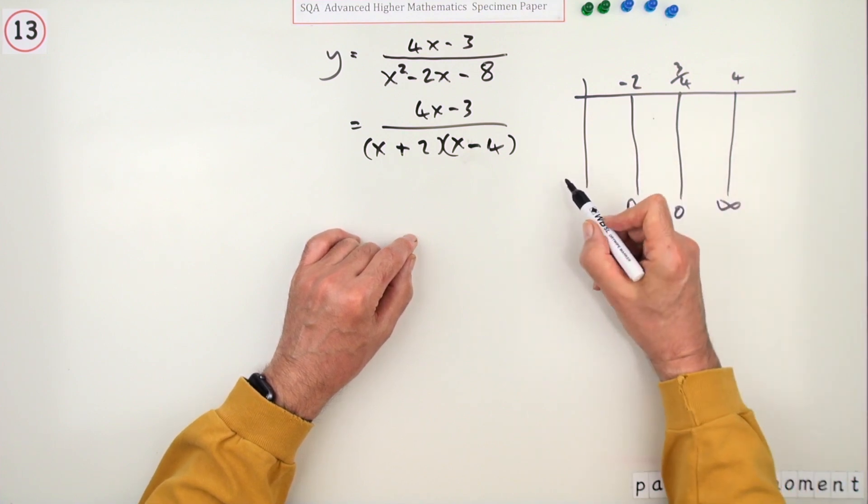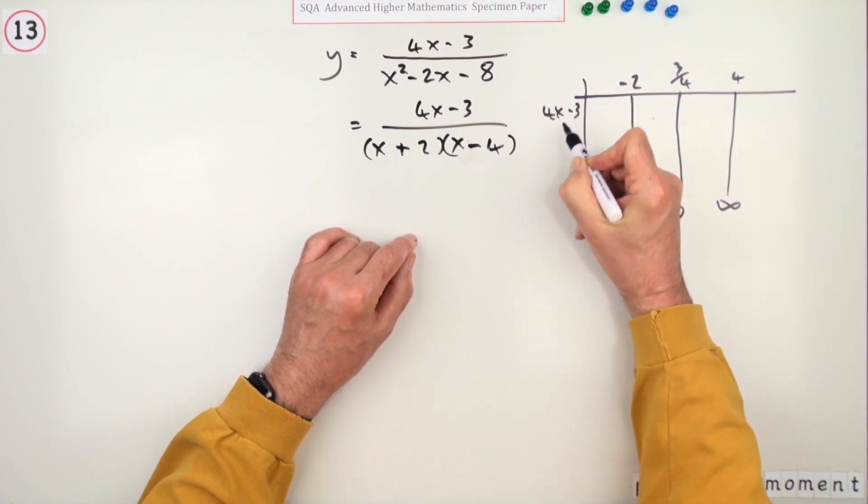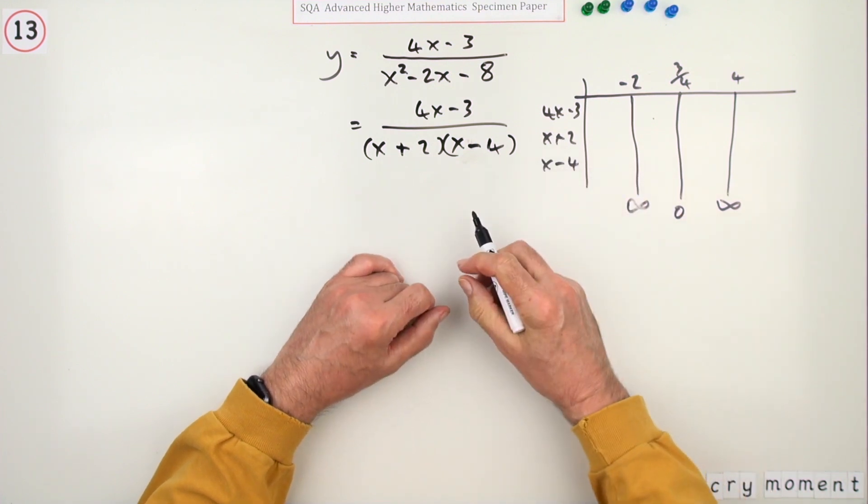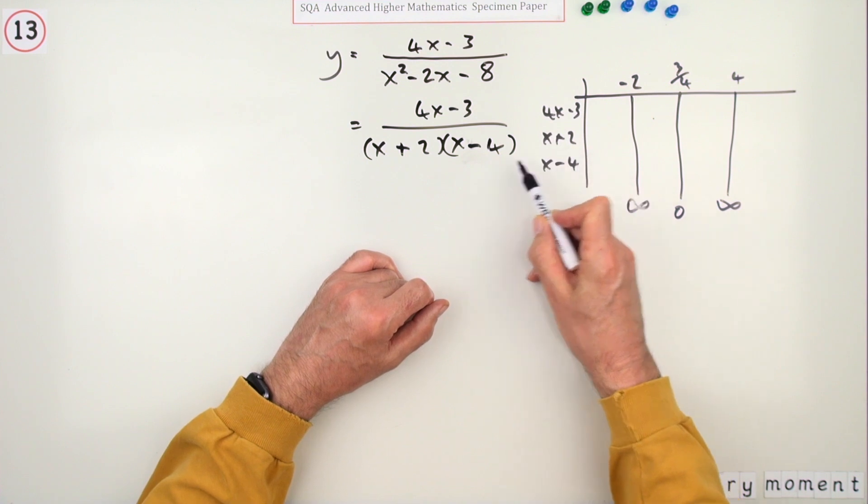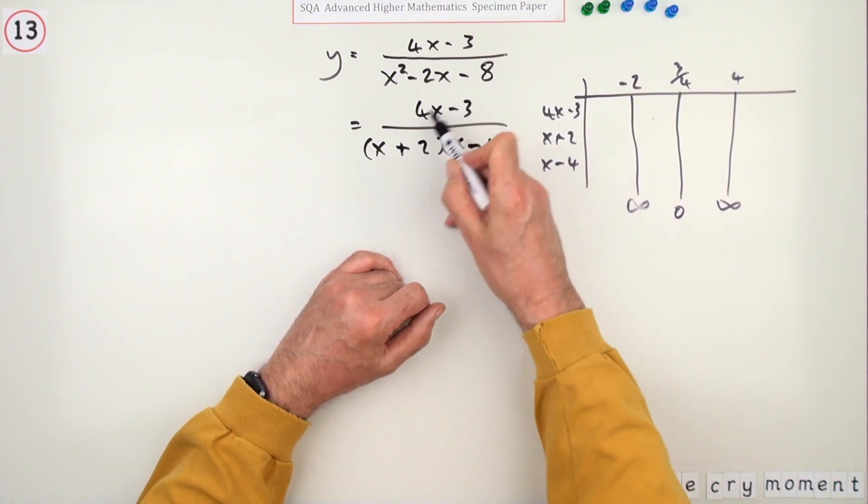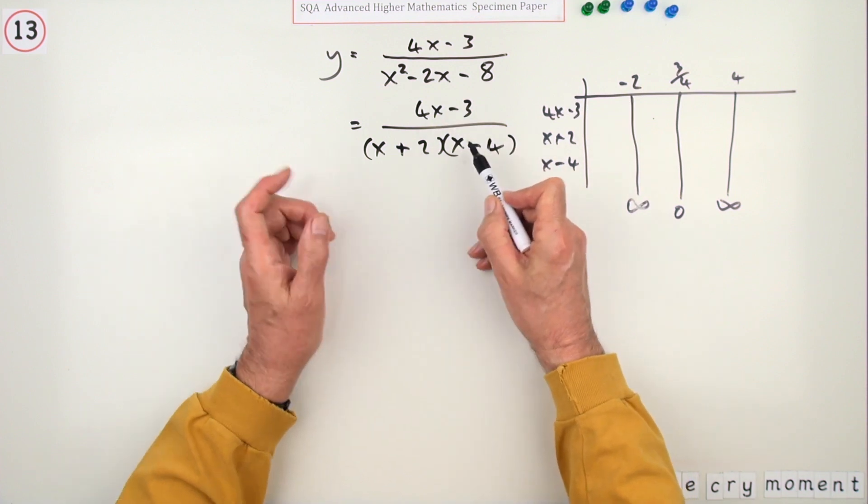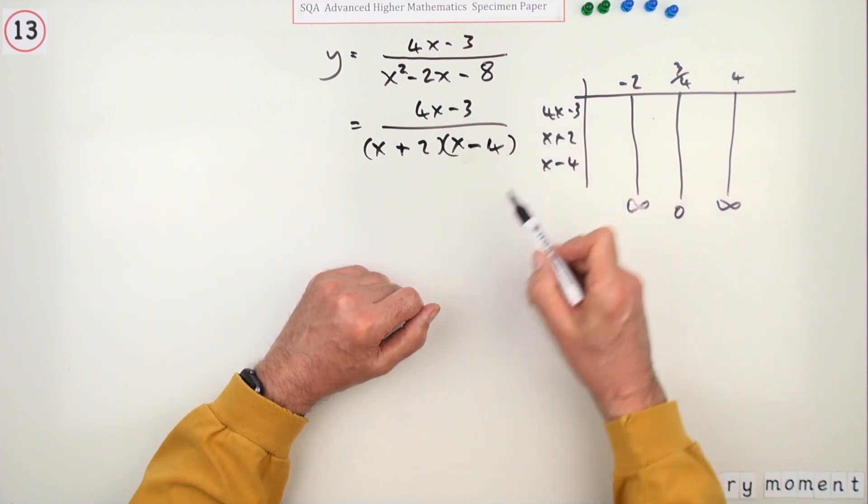And then find the value of this in between all of those values. But you don't need to do any calculations, because they're all going to come from the signs of these factors. These three factors: if they're all positive, the answer is positive. If they're all negative, being three of them, the answer is negative, and so on. And they're linear factors.